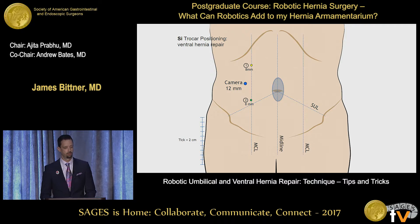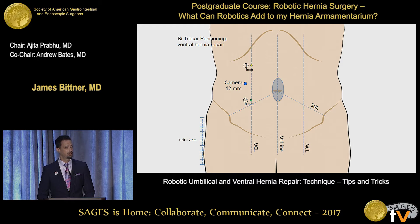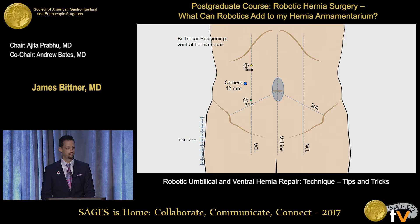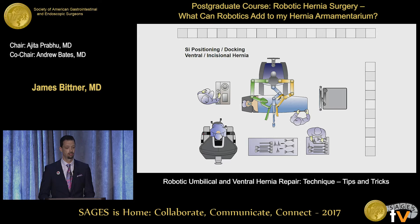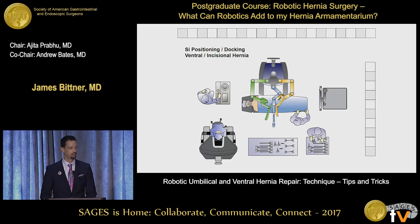Trocar positioning for midline ventral and incisional hernias: trocars are placed more lateral than what you see in typical illustrations, much more along the anterior axillary line or sometimes even more lateral in larger defects. That can vary by which robot you happen to be using, whether you're using an SI or XI as far as patient-trocar distances. With an XI, you don't ever have to move the patient — you can simply move the booms of the equipment.